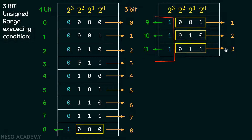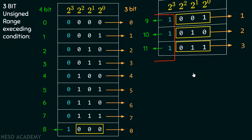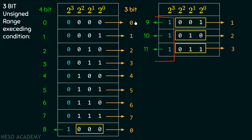For 11, this is equal to 3. As you can see in this example of 3-bit representation, our range is from 0 to 7. And if we try to exceed the range, we come back again to 0, then 1, then 2, then 3, and so on.